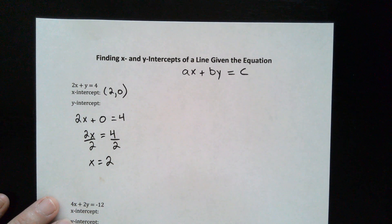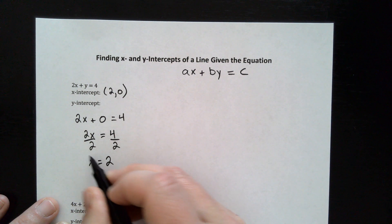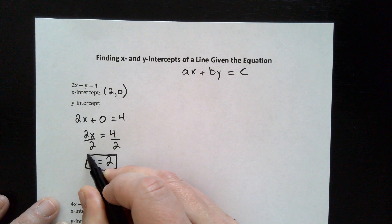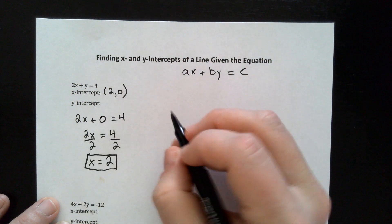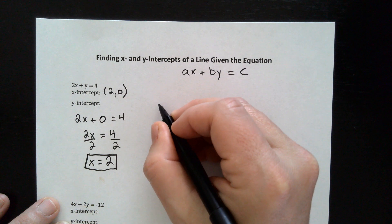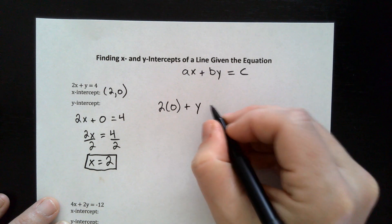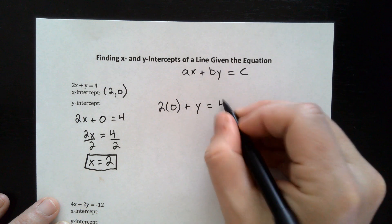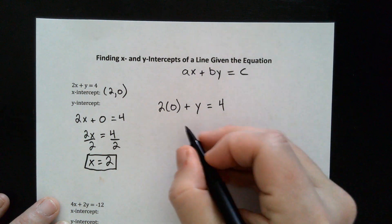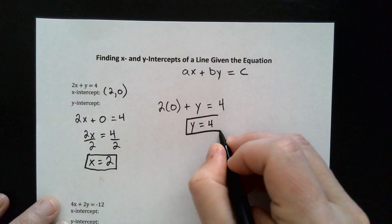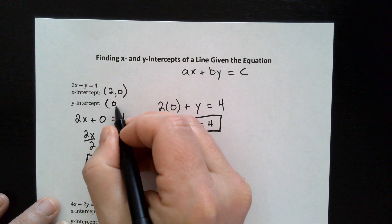Sometimes you'll just be asked to write just the two, so your x intercept is x equals two. For the y intercept, we're going to make x equal to zero. So instead of 2x, I'll have two times zero plus y equals four. The two times zero term goes away completely, so we're left with y is equal to four, which is your y intercept. As a point, it would be written as zero comma four.